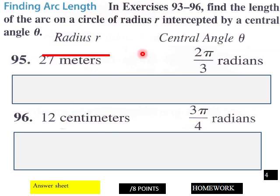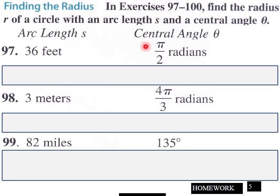Then find the radius r of a circle with an arc length s. Arc length is here, and here is your central angle in radians. They want you to find the radius now. Although this one is in degrees, find the radius.